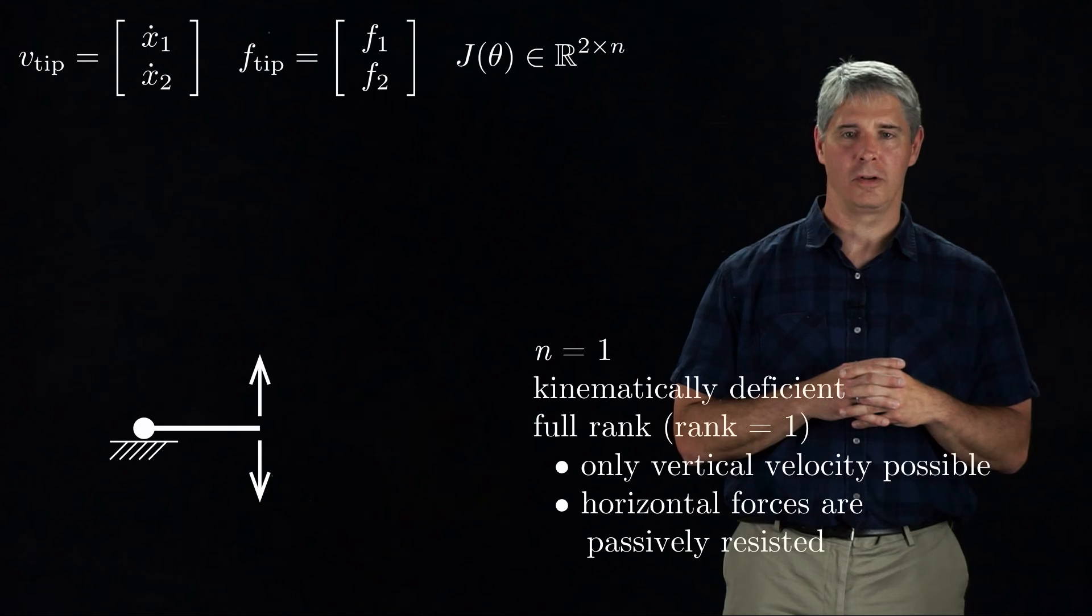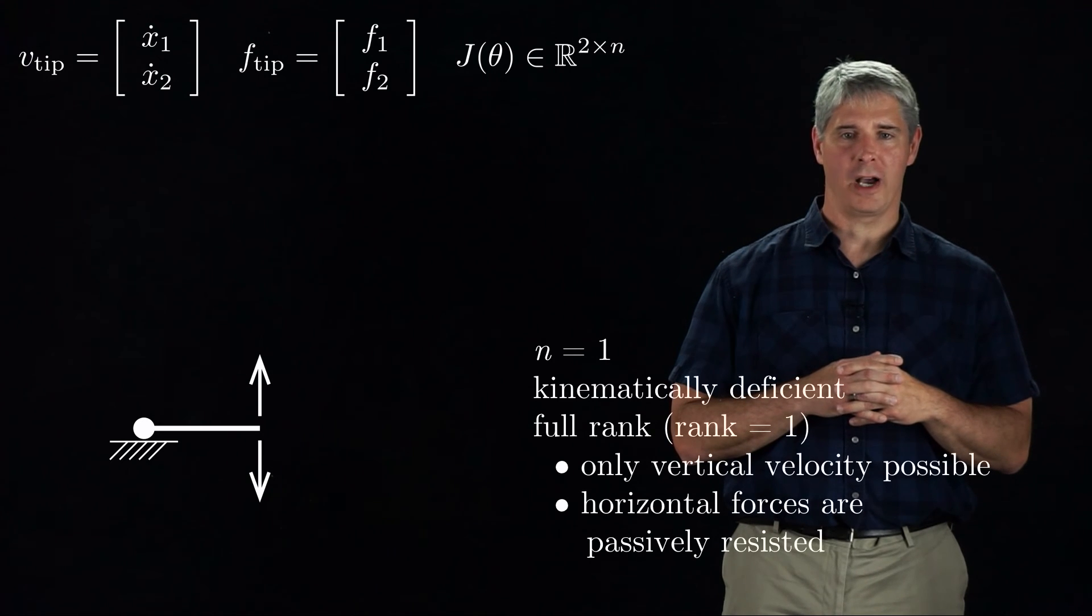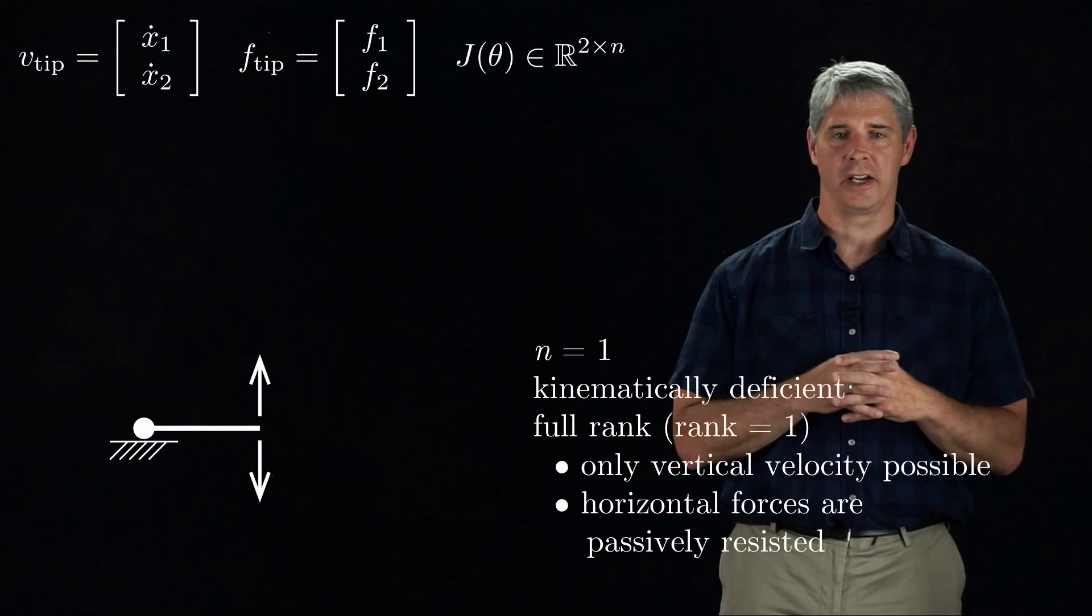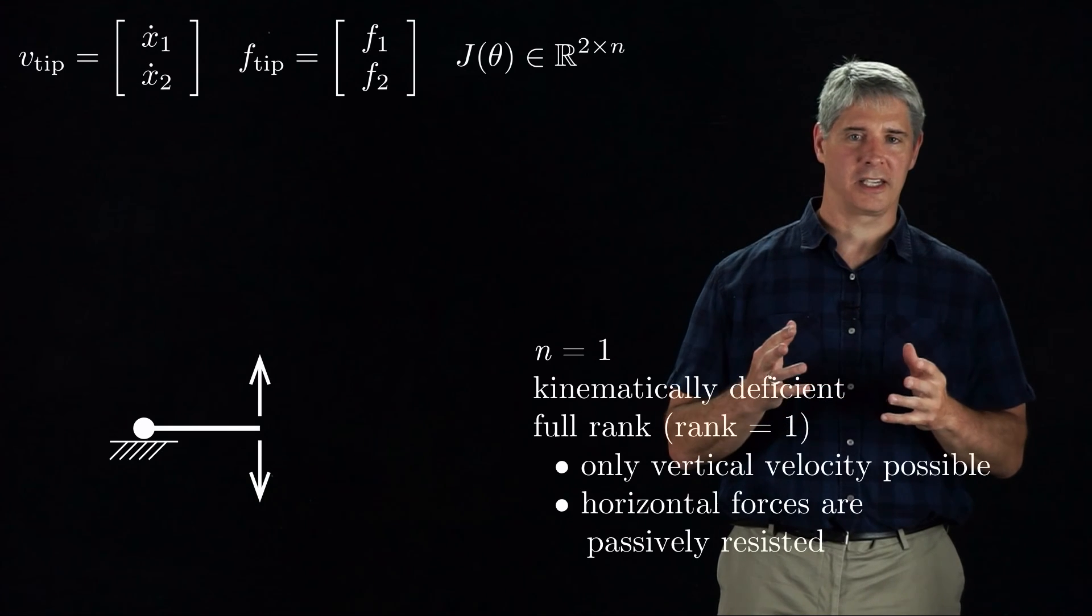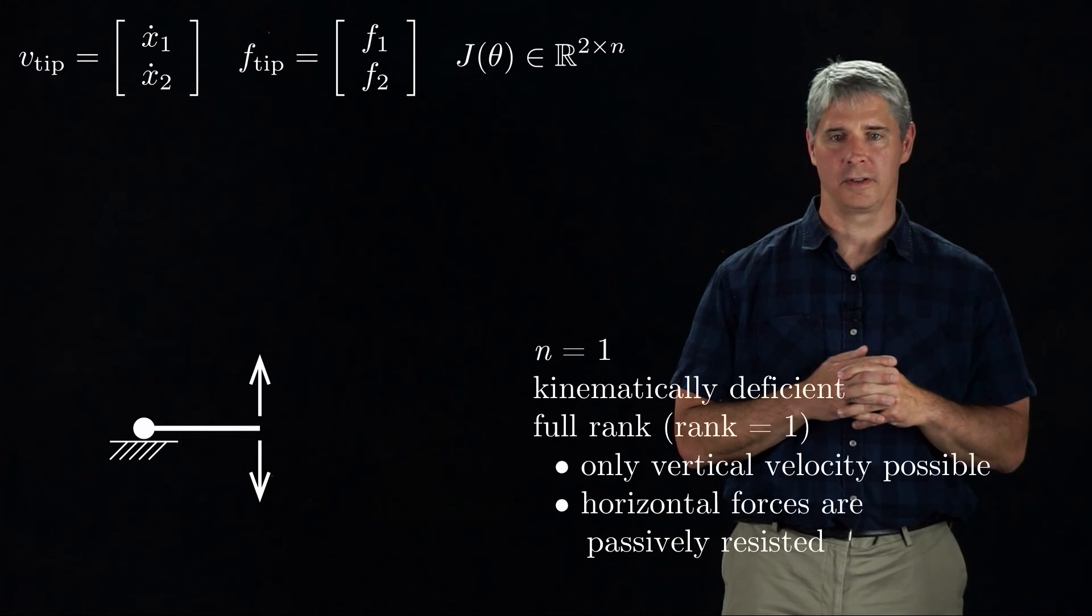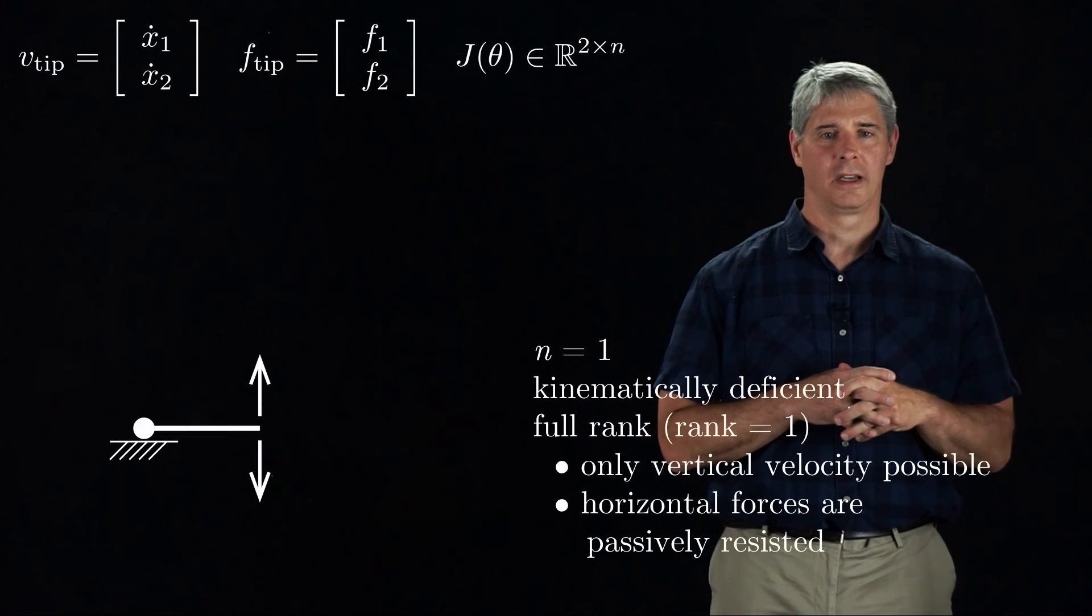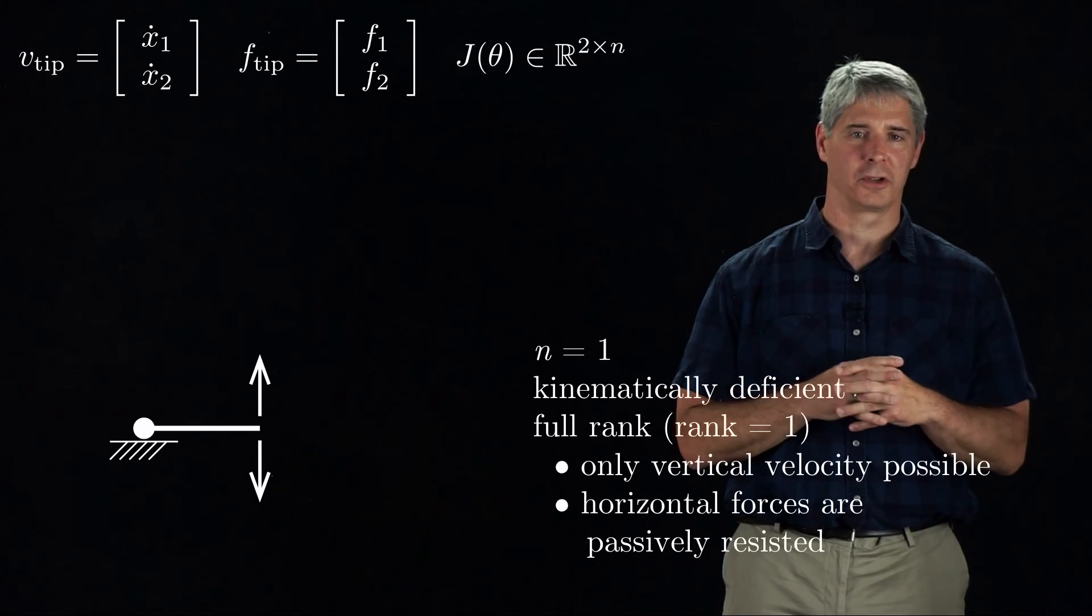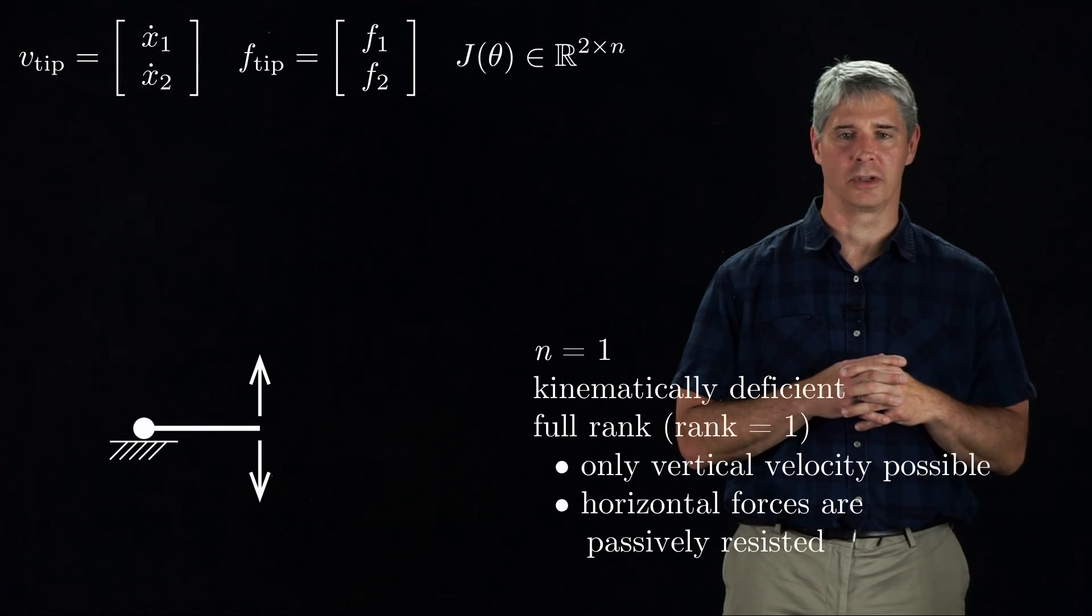Finally, we have a 1R robot. The Jacobian is 2x1 and its full rank, meaning the rank is equal to 1 at any configuration. This robot is kinematically deficient for the task of achieving arbitrary linear velocities at the tip, as it can only achieve linear velocities perpendicular to the link. Any horizontal force is passively resisted by the joint, while any vertical force must be actively resisted by the joint torque.